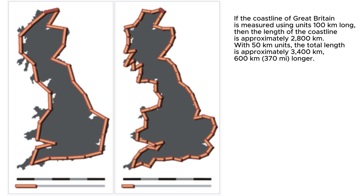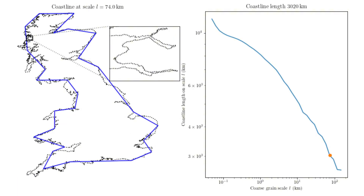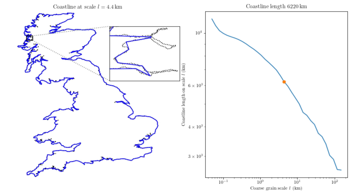Using a 50 km ruler produces a length of 3,400 km — 600 km longer. This seemingly paradoxical increase arises because smaller measuring units capture more of the coastline's intricate details.